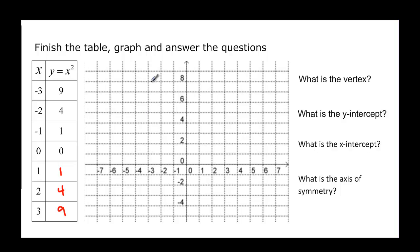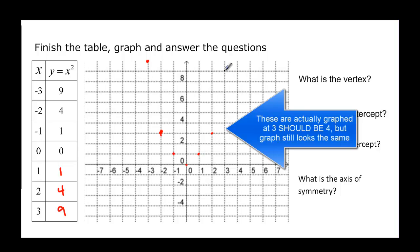2 squared would be 4, and 3 squared would be 9. Negative 3, 9 is going to be this point right here. Negative 2, 4 will be right here. Negative 1, 1, 0, 0, positive 1, 1, positive 2, 4, and positive 3, 9.